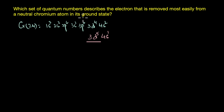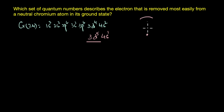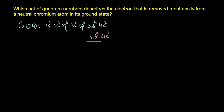The electron that can be most easily removed from the chromium atom is the one with the highest energy — the one present in the highest energy orbital. Higher energy orbitals are farther away from the nucleus and therefore have less attractive pull toward it, making it easier to knock off those electrons compared to lower energy orbitals. In chromium, the highest energy orbital is the 4s orbital.